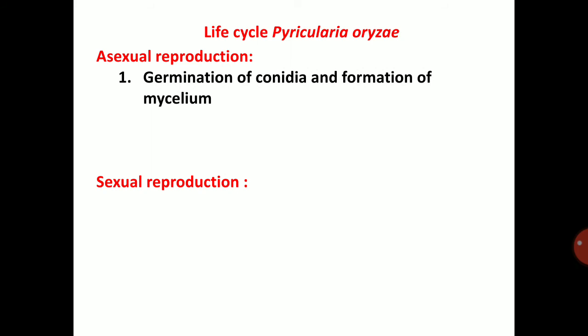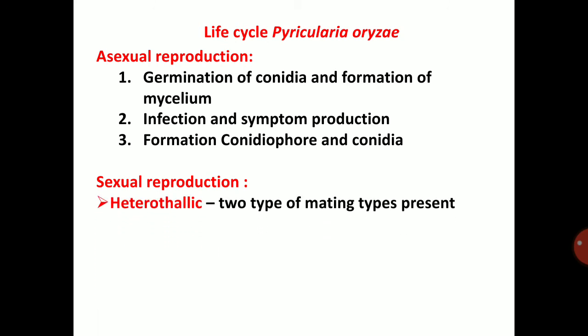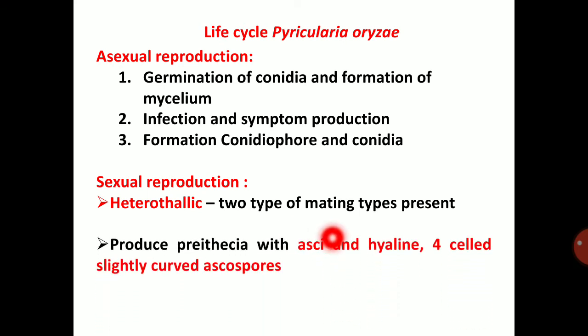Life cycle of Pyricularia oryzae in brief: germination of conidia and formation of mycelium, then infection and symptom production, followed by formation of conidiophores and conidia. For sexual reproduction, it is a heterothallic fungus with two mating types present in separate mycelia. Perithecia are produced containing asci and hyaline, four-celled, slightly curved ascospores.